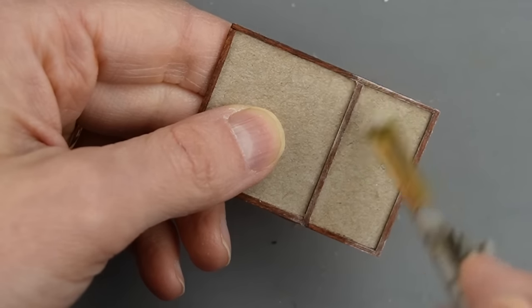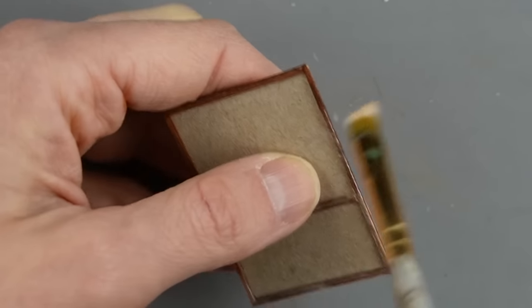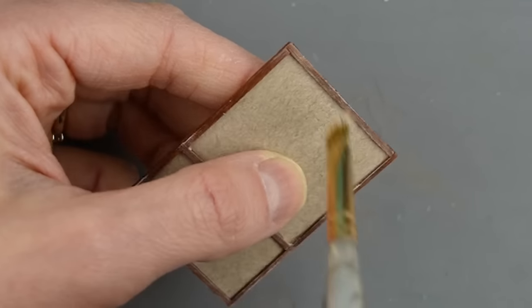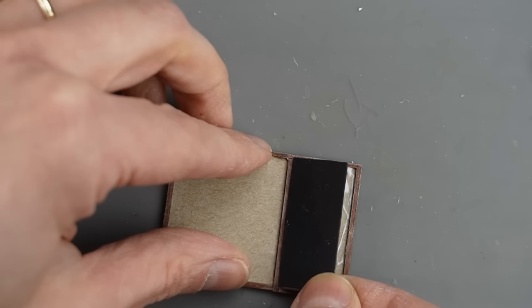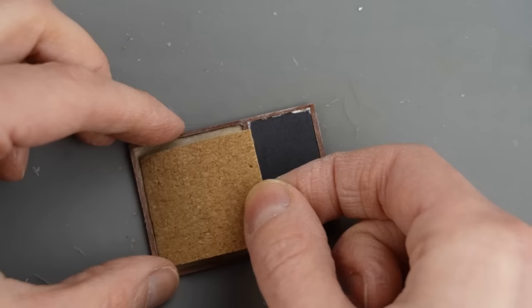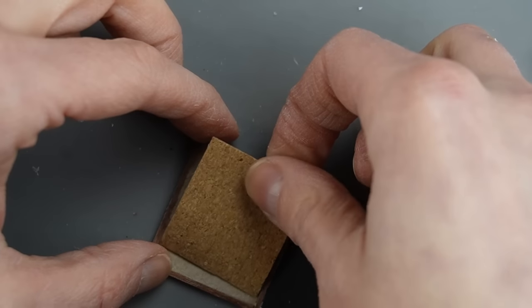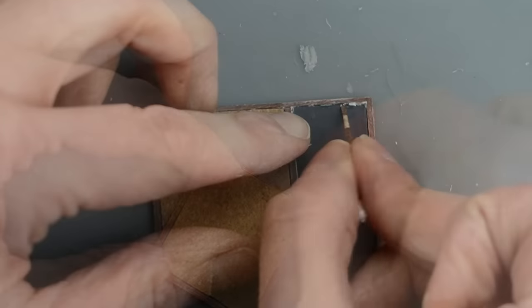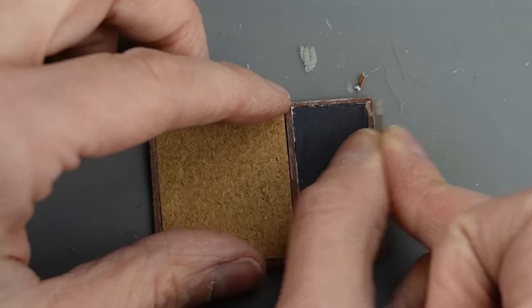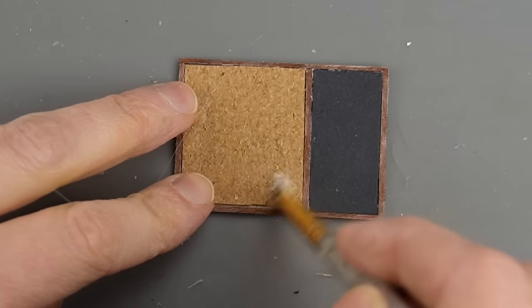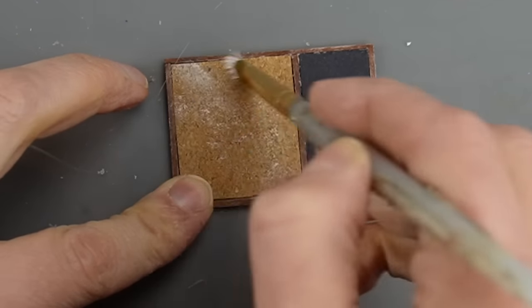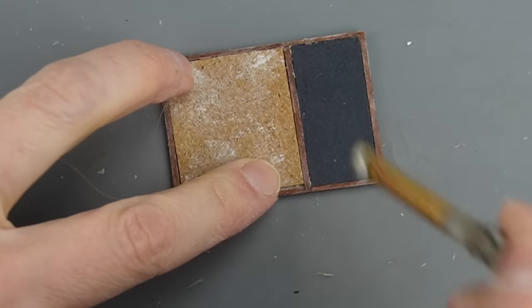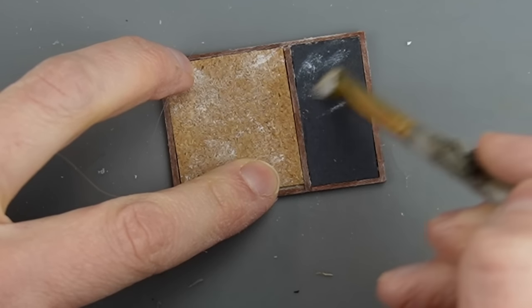Dry brushing is often used to highlight details, but I also like to use it to subdue colors and make something look older and faded. I removed the protective backing from the corkboard and stuck it down with its own adhesive. The corkboard looks brand new, so I'm dry brushing that as well as the chalkboard. I want the chalkboard to look like someone has erased it and left some chalk residue behind.